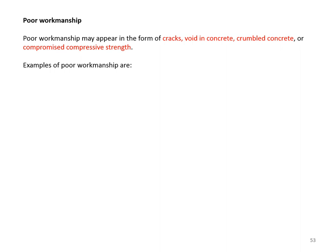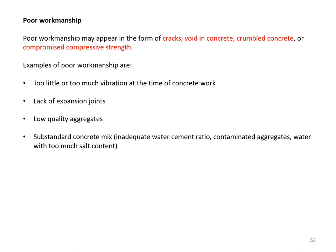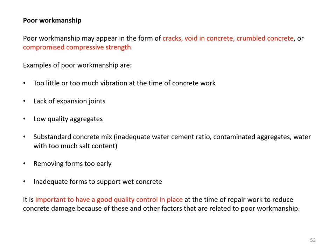Poor workmanship may appear as cracks, voiding concrete, crumbled concrete, or compromised compression strength. Examples include too little or too much vibration, lack of expansion joints, low-quality aggregates, substandard concrete mix, inadequate water-cement ratio, contaminated aggregates, water with too much salt content, removing forms too early, and inadequate formwork. Good quality control is important at the time of repair work to reduce these and other factors.